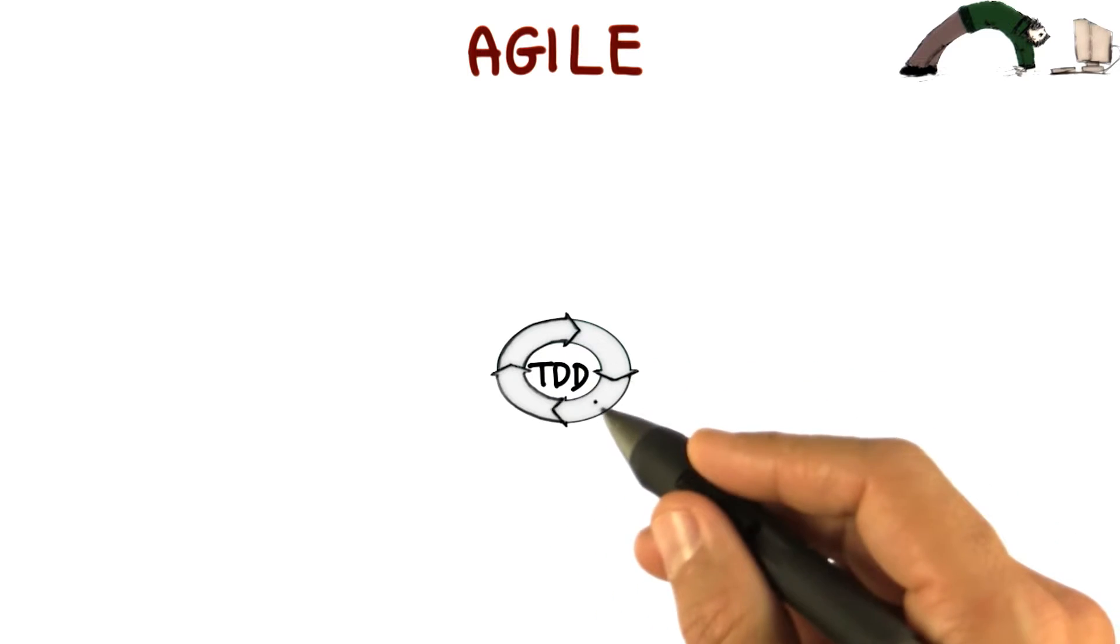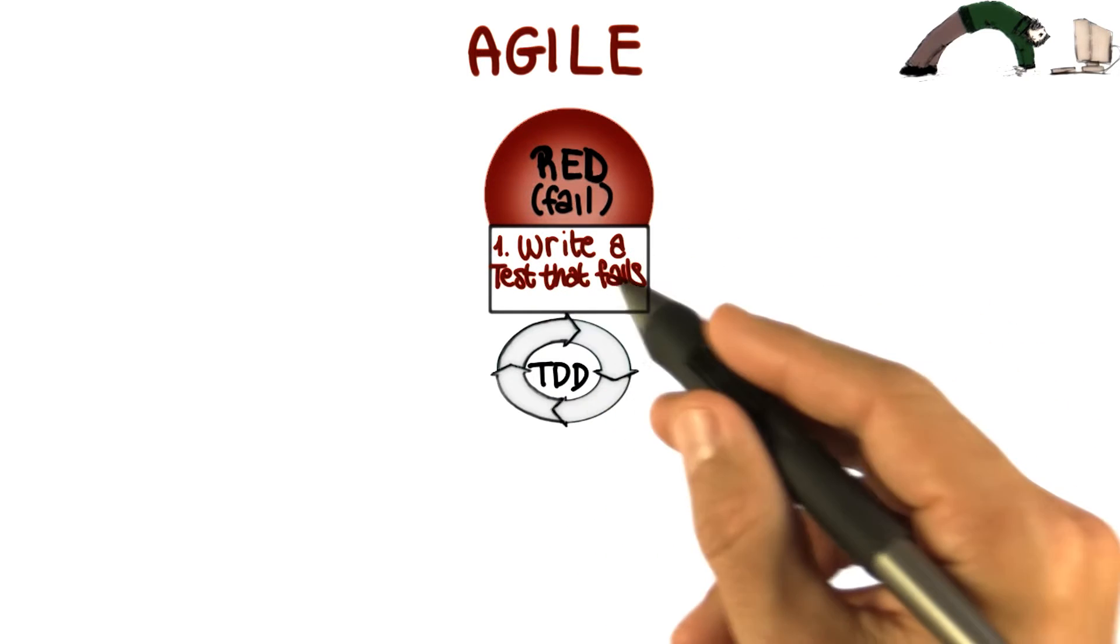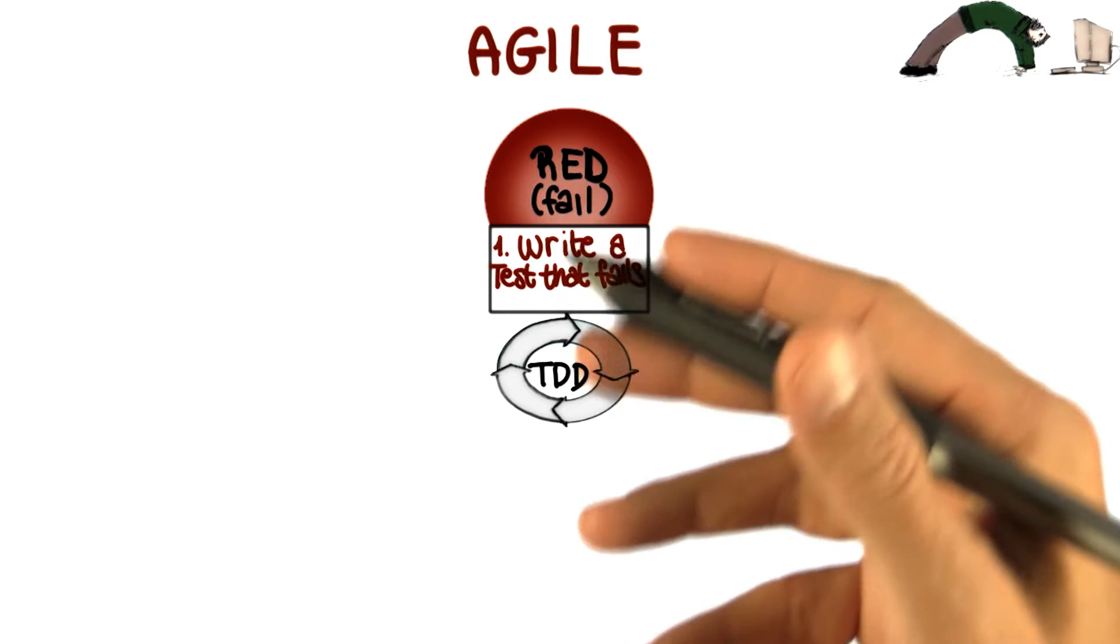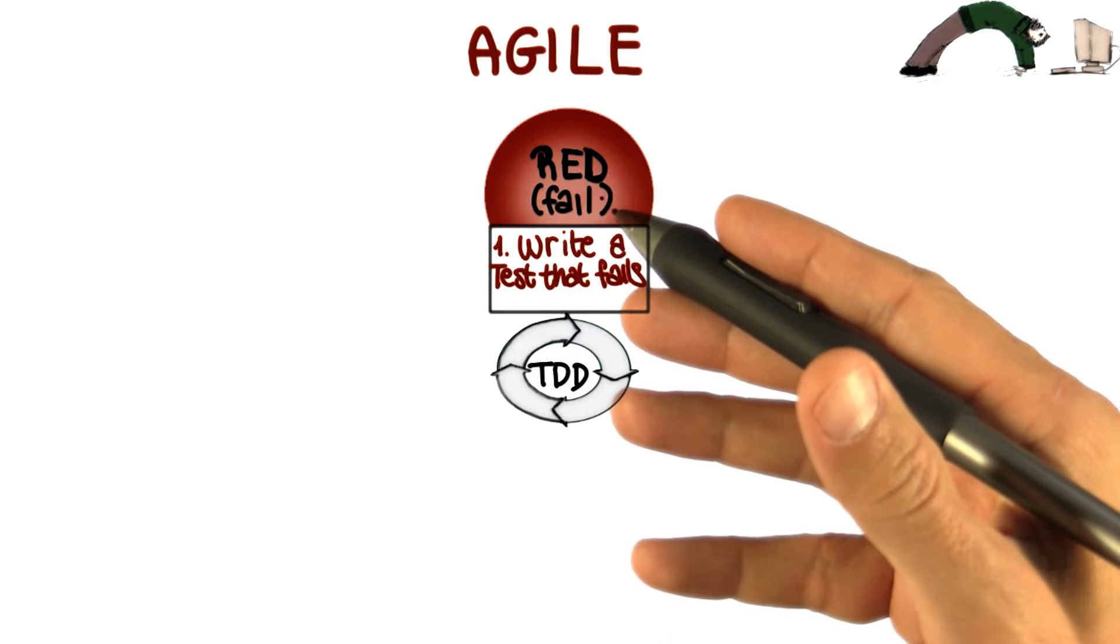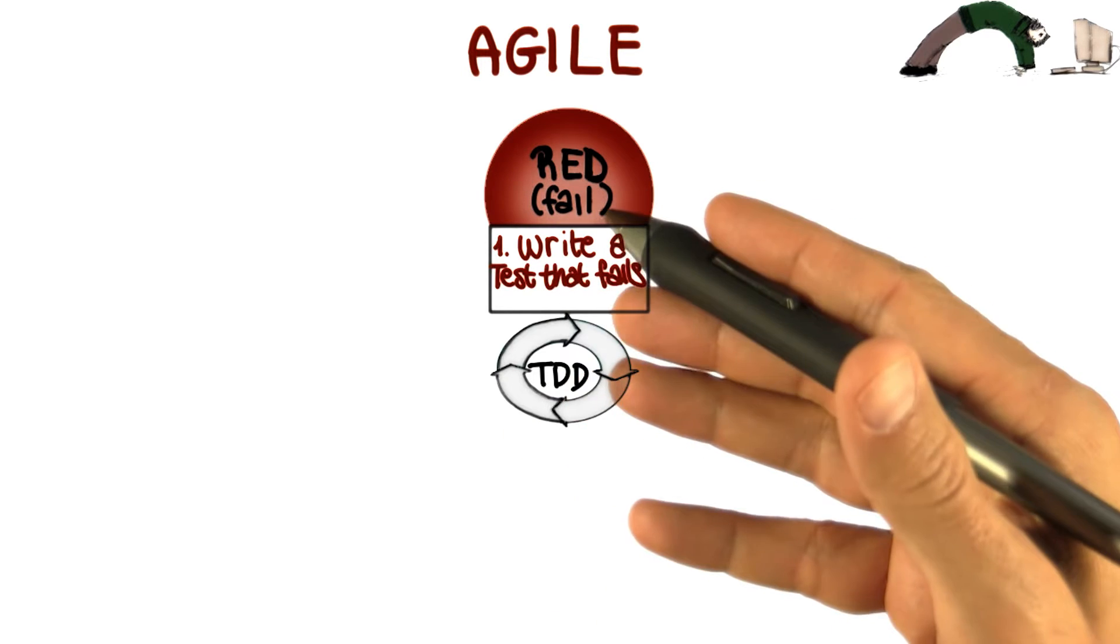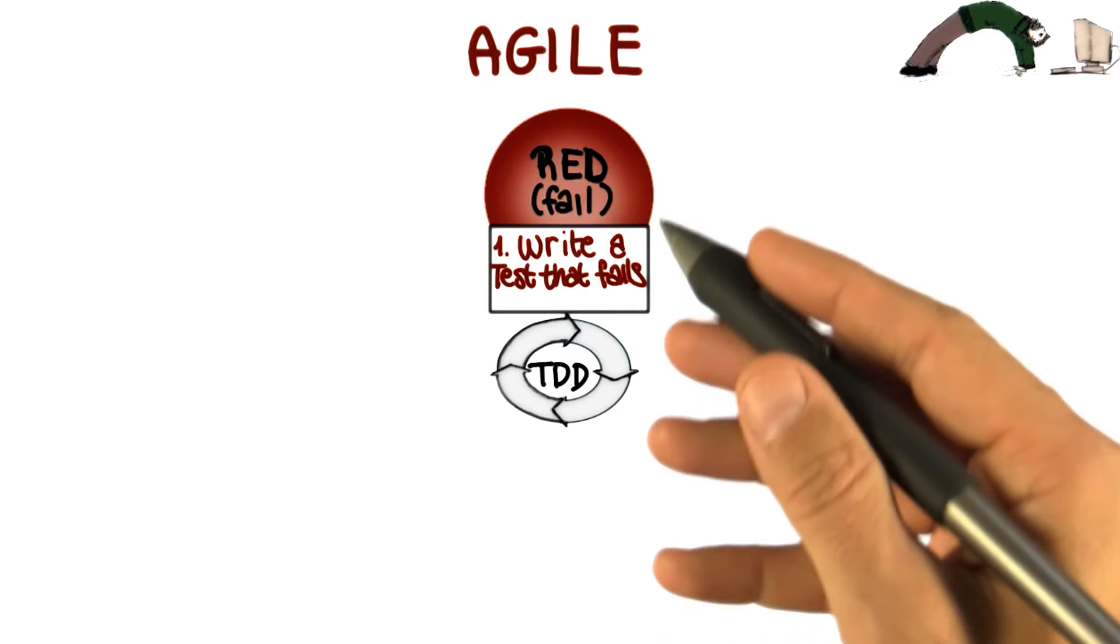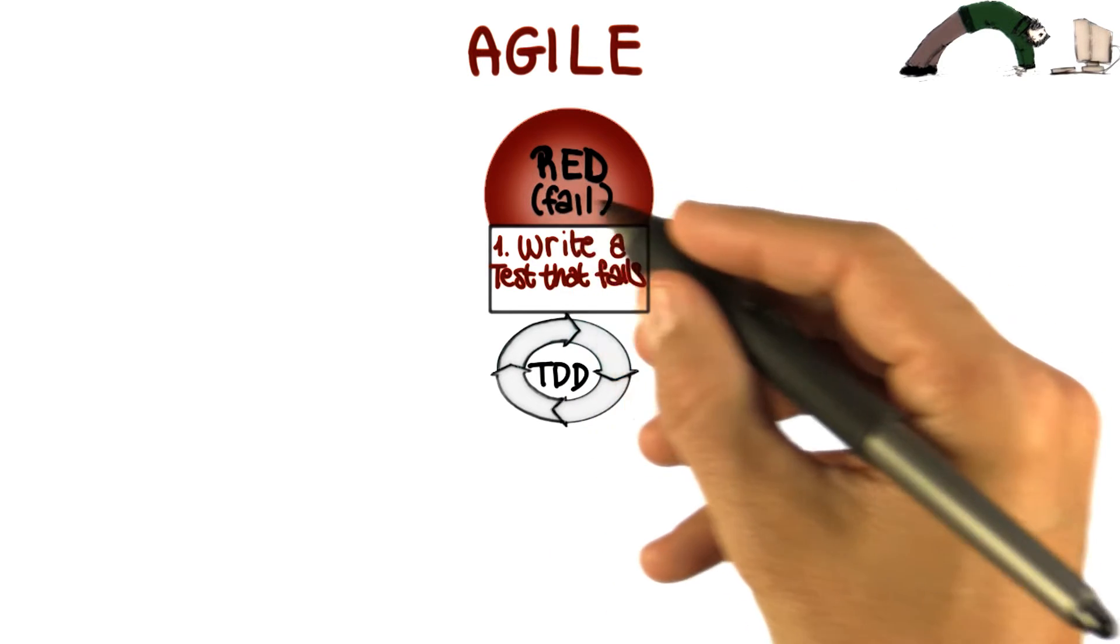It's based on the iteration of three main phases. In the first one that we mark as red, we write test cases that encode our requirements, and for which we haven't written code yet. Therefore, they will fail, obviously. So we're in this sort of red or fail phase.